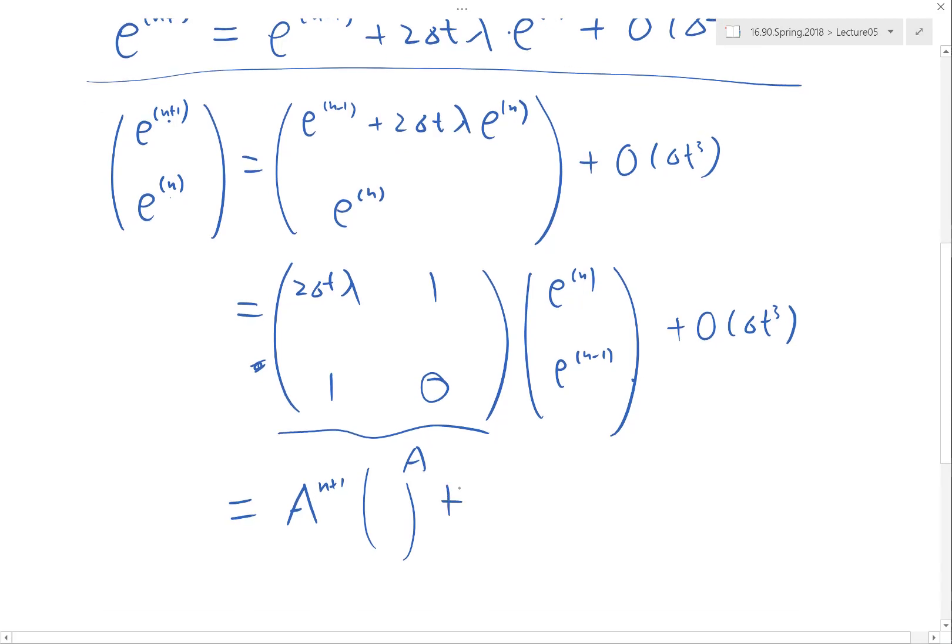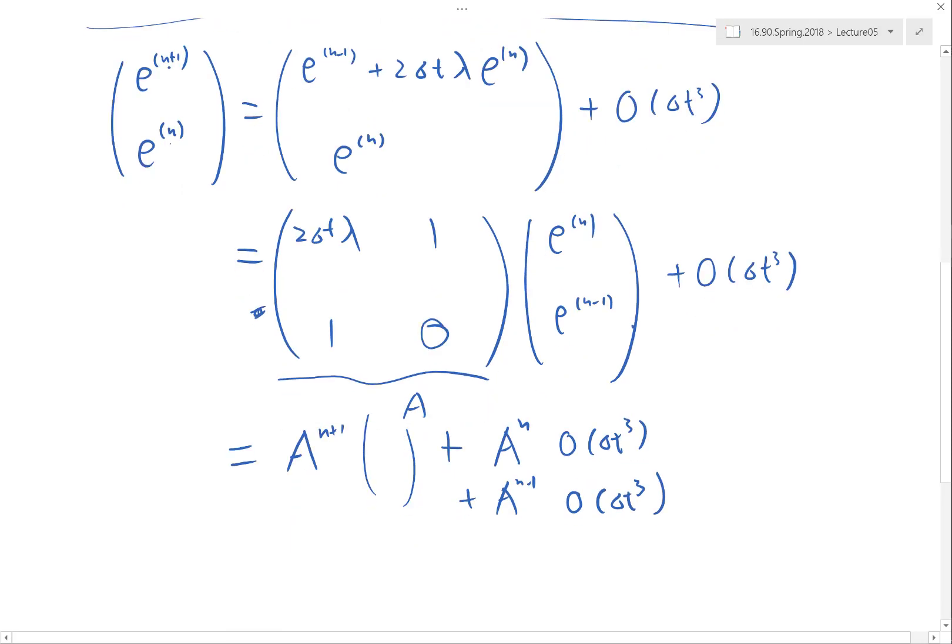And plus A to the nth power times O delta t cube plus A to the n minus 1th power times O delta t cube, and so on. So I get basically a lot of terms that is multiplied with O delta t cube except the earlier contributions are going to be multiplied by A to a certain high power.